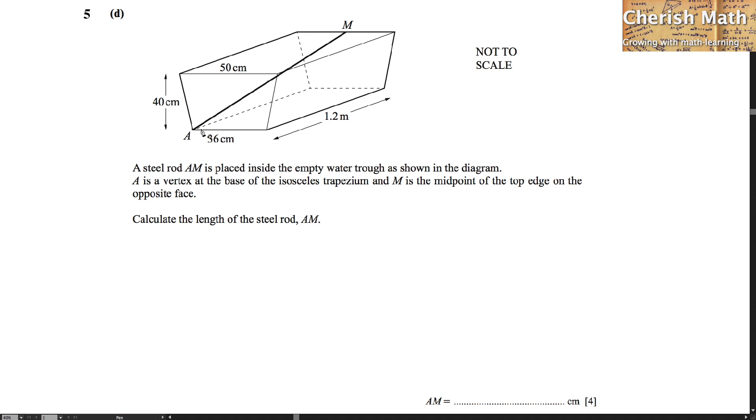Now, we need to connect a dashed line from the vertex A to the point M to show the location. A to C here is actually 36 cm. Now, I label here as the point B from this vertex that I'm pointing here to B stands for 18 cm.